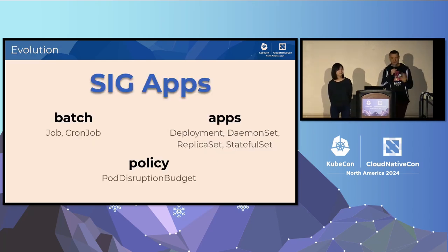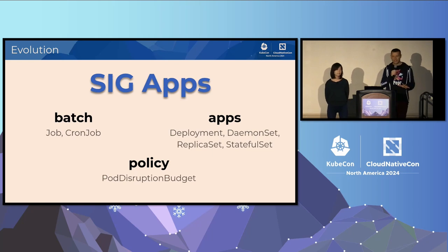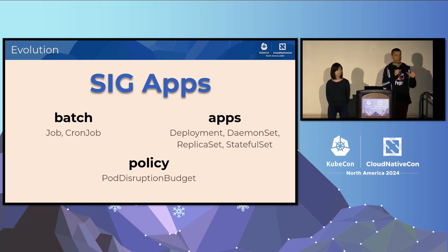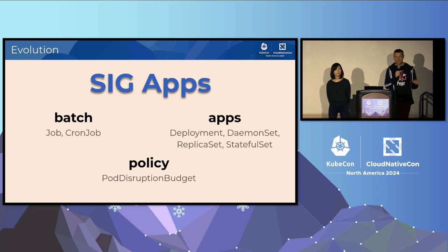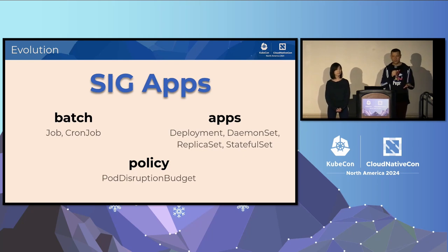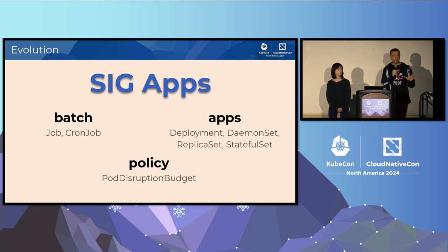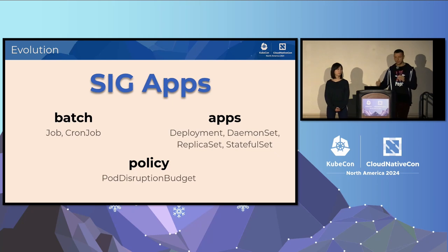SIG Apps stands for Special Interest Group — and apps is a broad topic. The SIG oversees three areas we've been slowly developing over the past decade. The first is the workloads API group — things like Deployment, ReplicaSet, and StatefulSets. Over time we added the batch group, covering jobs and cron jobs. And eventually a third group, which holds the pod disruption budget, ensuring a minimum number of replicas are running during disruptions like node draining or node upgrades.